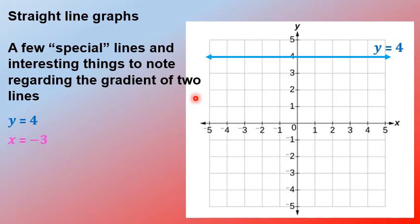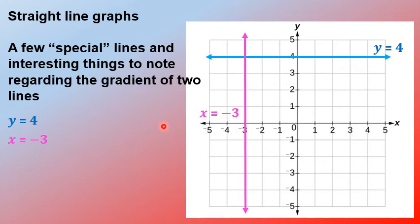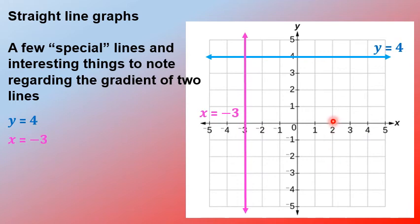Another special line: x equals negative 3. Very easy — go to where x is negative 3 and draw a vertical line going straight up. The gradient here is undefined. If you were walking along the x-axis and suddenly had to walk straight up, that's impossible — that's why we say the gradient is undefined for a vertical line. Similarly, x equals 2 means you go to x equals 2 and draw your vertical line there.